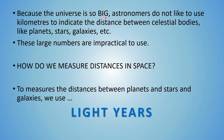Because the universe is so big, astronomers do not like to use kilometers to indicate the distance between celestial bodies like planets, stars, and galaxies. The reason is that these large numbers are just impractical to use. So how do we measure distances in space? We use what we call light years, light hours, and light minutes.